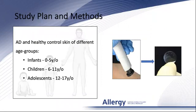Tape strips were used to collect lesional and non-lesional AD samples and normal skin samples from age-appropriate healthy controls. We assessed 74 AD-related markers using RT-PCR.